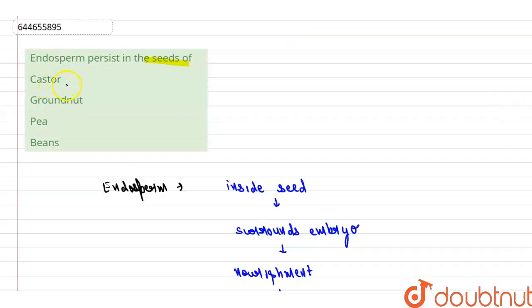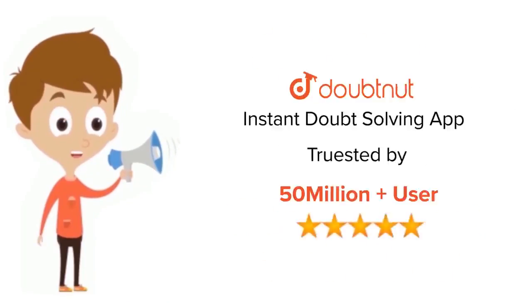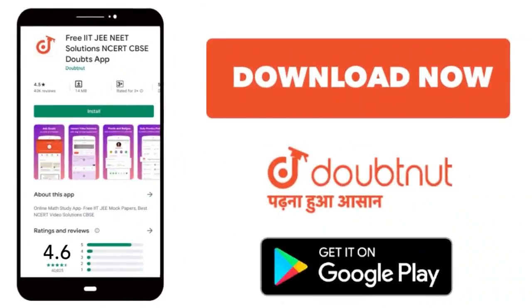Now look at the options. In the first option we have castor, which is an example of endosperm-containing seeds. The second, third, and fourth options — groundnut, pea, and bean — belong to ex-albuminous seeds that do not have persistent androsperm. So the correct option is A. Thank you.